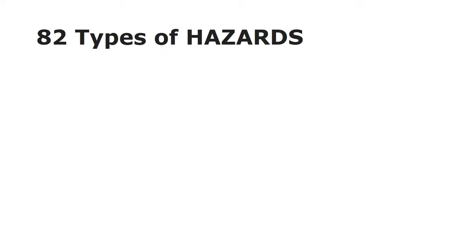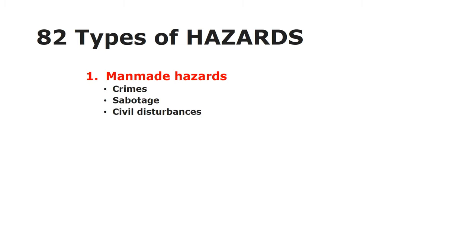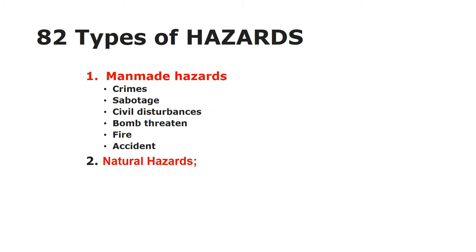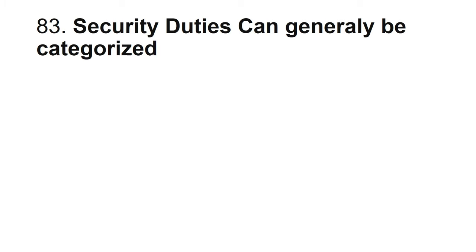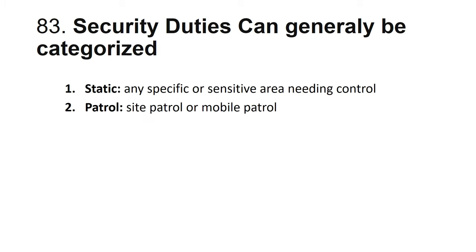Types of hazards in the workplace: man-made hazards — such as crime, sabotage, civil disturbance, bomb threat, fire, and accidents; and natural hazards — such as flood, earthquake, fire, and windstorm. There are two types of hazards: man-made and natural. Security duties can generally be categorized as static — where the security guard stays in one place — and patrol — where the security guard moves around the periphery.